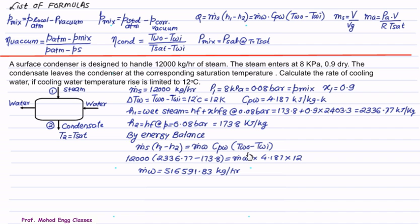Taking the energy balance, the heat rejected by the steam equals heat absorbed by the cooling water: Ṁs(H1 − H2) = Ṁw · CPw · (TWO − TWI). Substituting: mass of steam = 12,000 kg/hr, H1 = 2336.77 kJ/kg, H2 = 173.8 kJ/kg, CPw = 4.187 kJ/kg·K, and temperature rise = 12°C, we get the mass flow rate of water as 516,591.83 kg per hour.